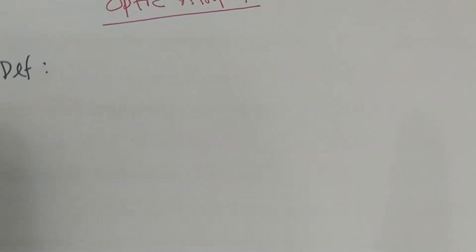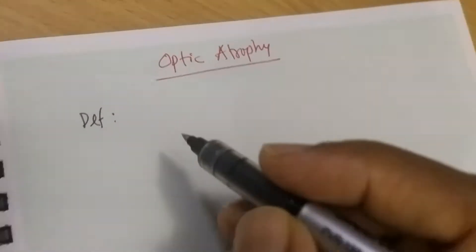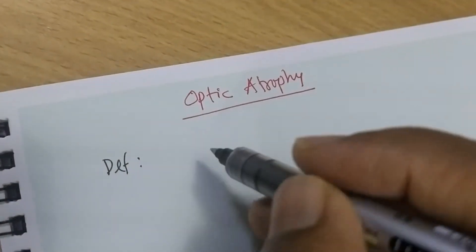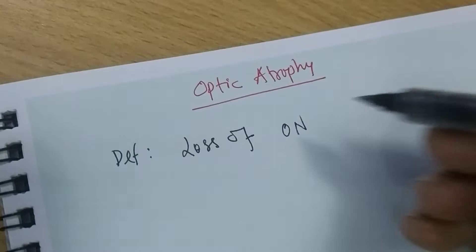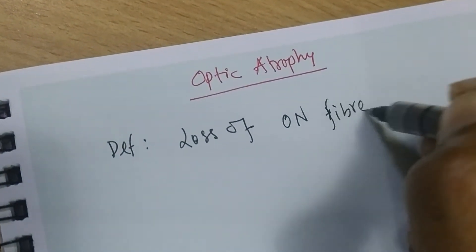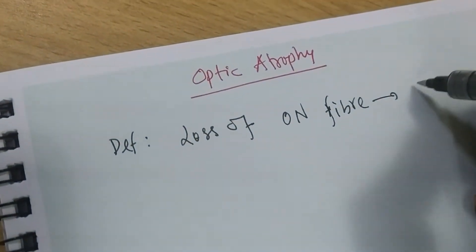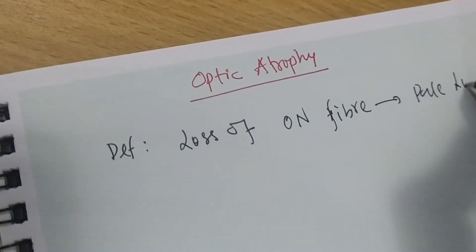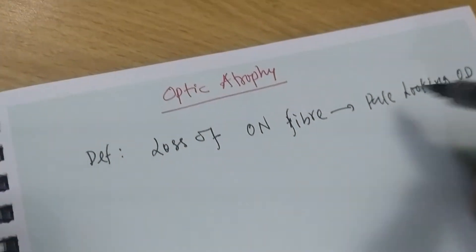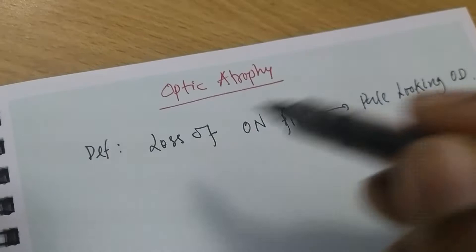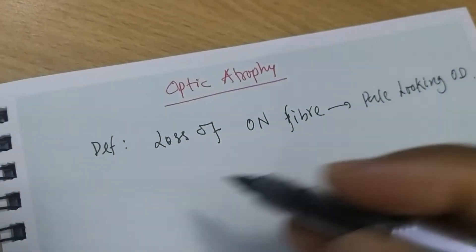Optic atrophy is a very important topic. Loss of optic nerve fiber causes the optic disc to appear pale. This pale-looking optic disc is called optic atrophy. Optic atrophy is due to loss of optic nerve fiber.